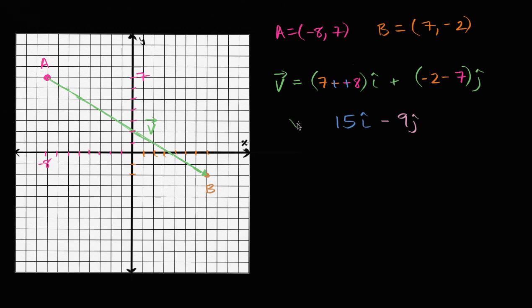That's one way to write our vector. And another way is just to make sure we remember there's just a bunch of different notations that people use for vectors. You could write it like this. You could just use parentheses. You could just say it's 15 comma negative nine. These are just different representations of the same vector.